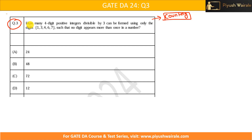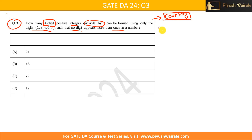Let's apply the counting principle concept here. The question asks: how many four-digit positive integers divisible by three can be formed using only the digits {1, 3, 4, 6, 7}? We have five digits and need to find how many four-digit integers are possible, divisible by three, such that no digit appears more than once — meaning repetition is not allowed.